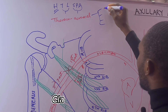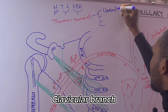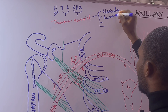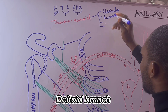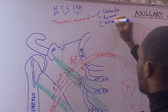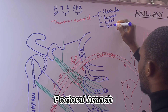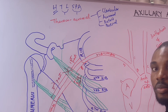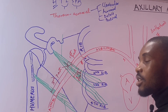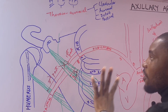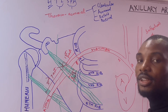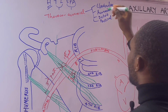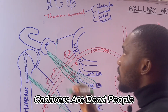The thoracoacromial gives off four branches: the clavicular branch, the acromial branch, the deltoid branch, and the pectoral branch. To remember these, use the mnemonic 'cadavers are dead people' — C for clavicular, A for acromial, D for deltoid, P for pectoral.